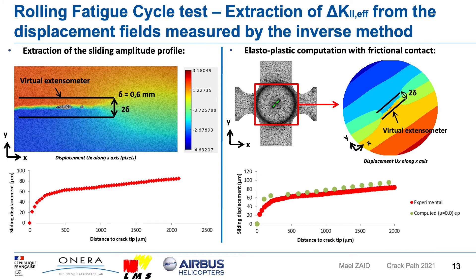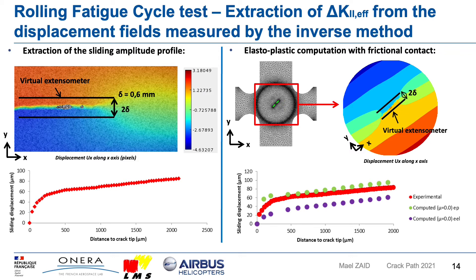In a second step, an elastoplastic computation with frictional contact is performed using a cruciform specimen with a loading condition equivalent to the test. We try to find an apparent friction coefficient allowing us to reproduce a similar sliding amplitude profile to the one obtained by DIC. For example, with a friction coefficient equal to zero, the sliding displacement is overestimated compared to the experimental one. To illustrate the influence of plasticity, we compare the sliding amplitude profile for elastic versus elastoplastic computation. Plasticity increases the crack sliding displacement, and without taking it into account, we cannot replicate the sliding amplitude displacement obtained experimentally.